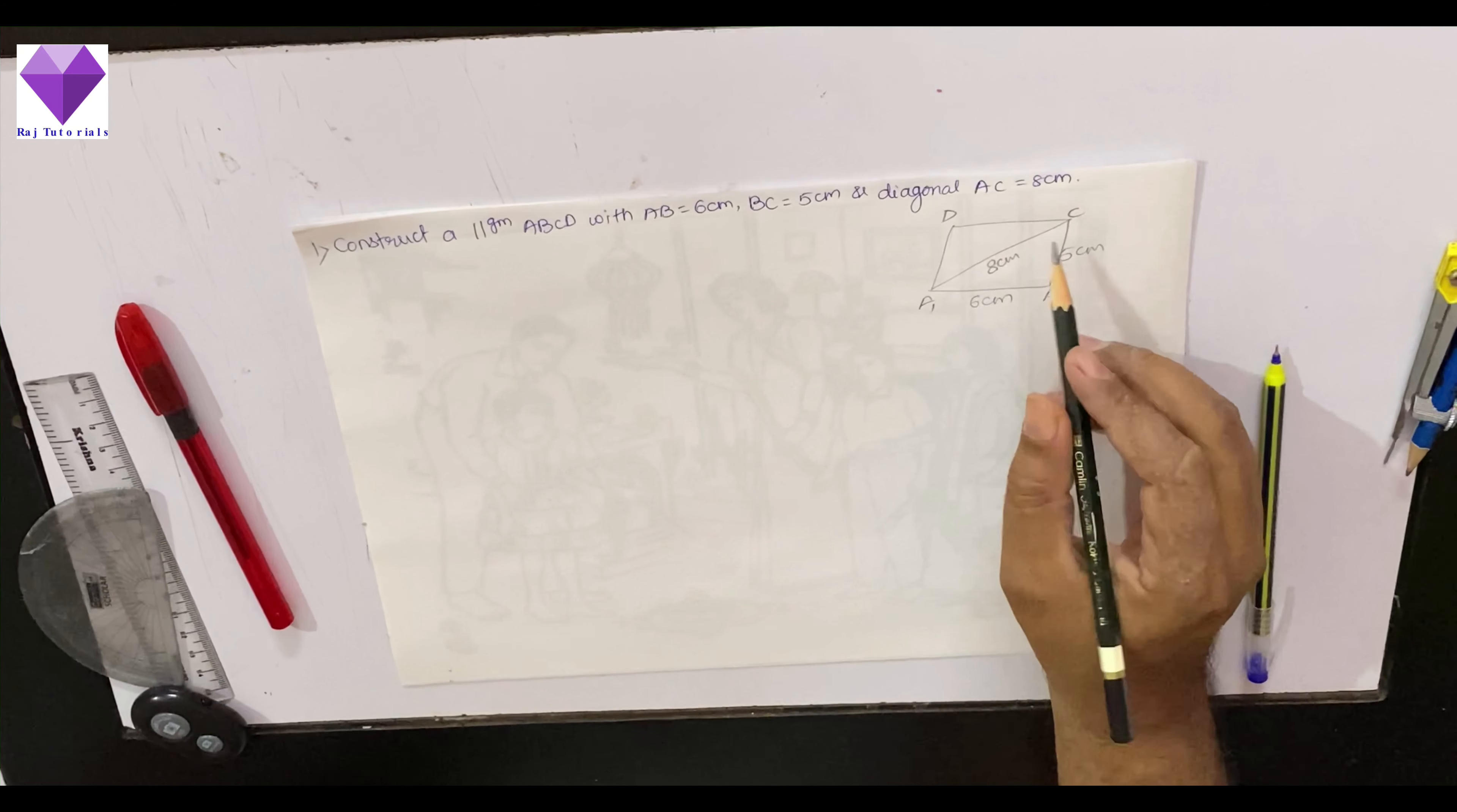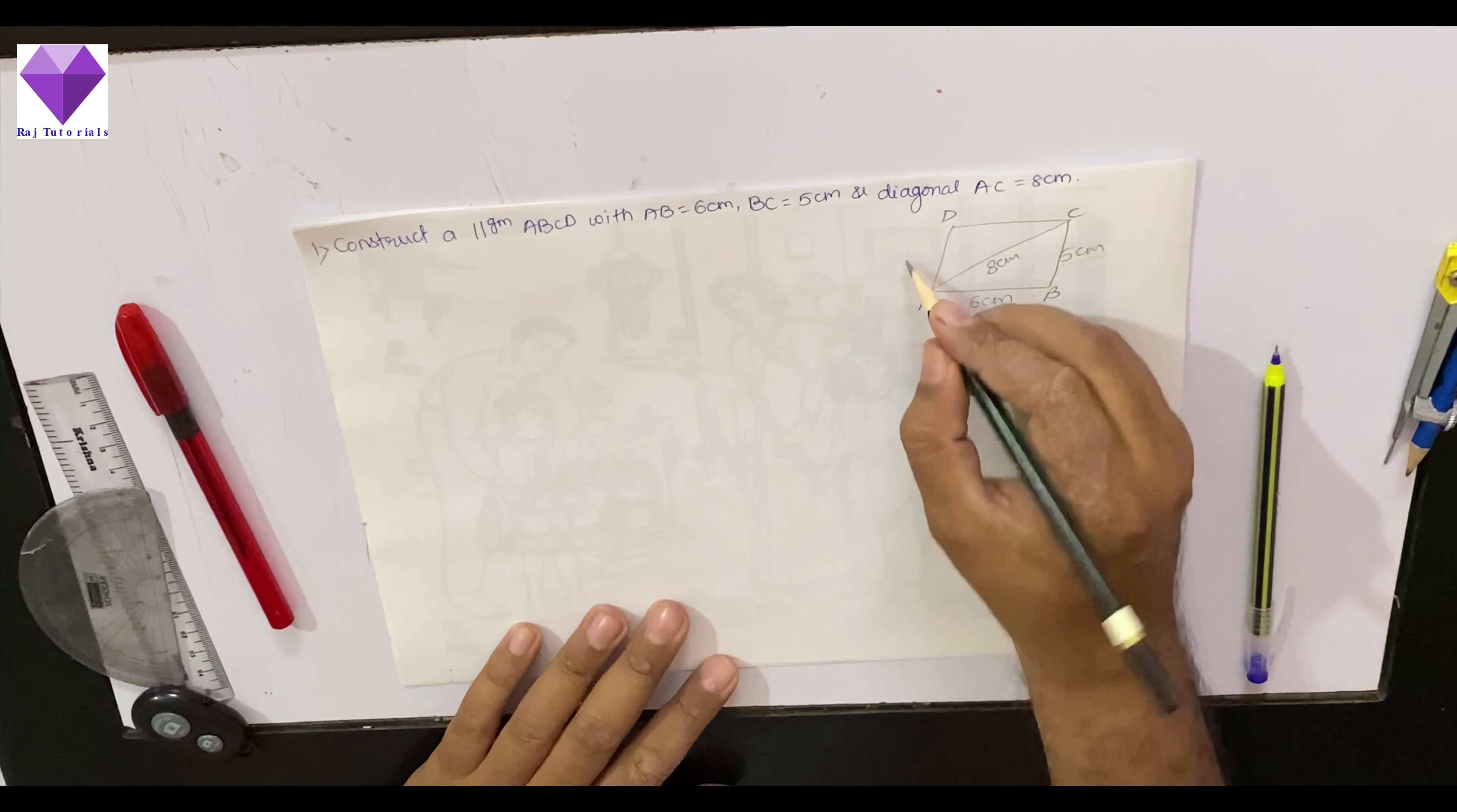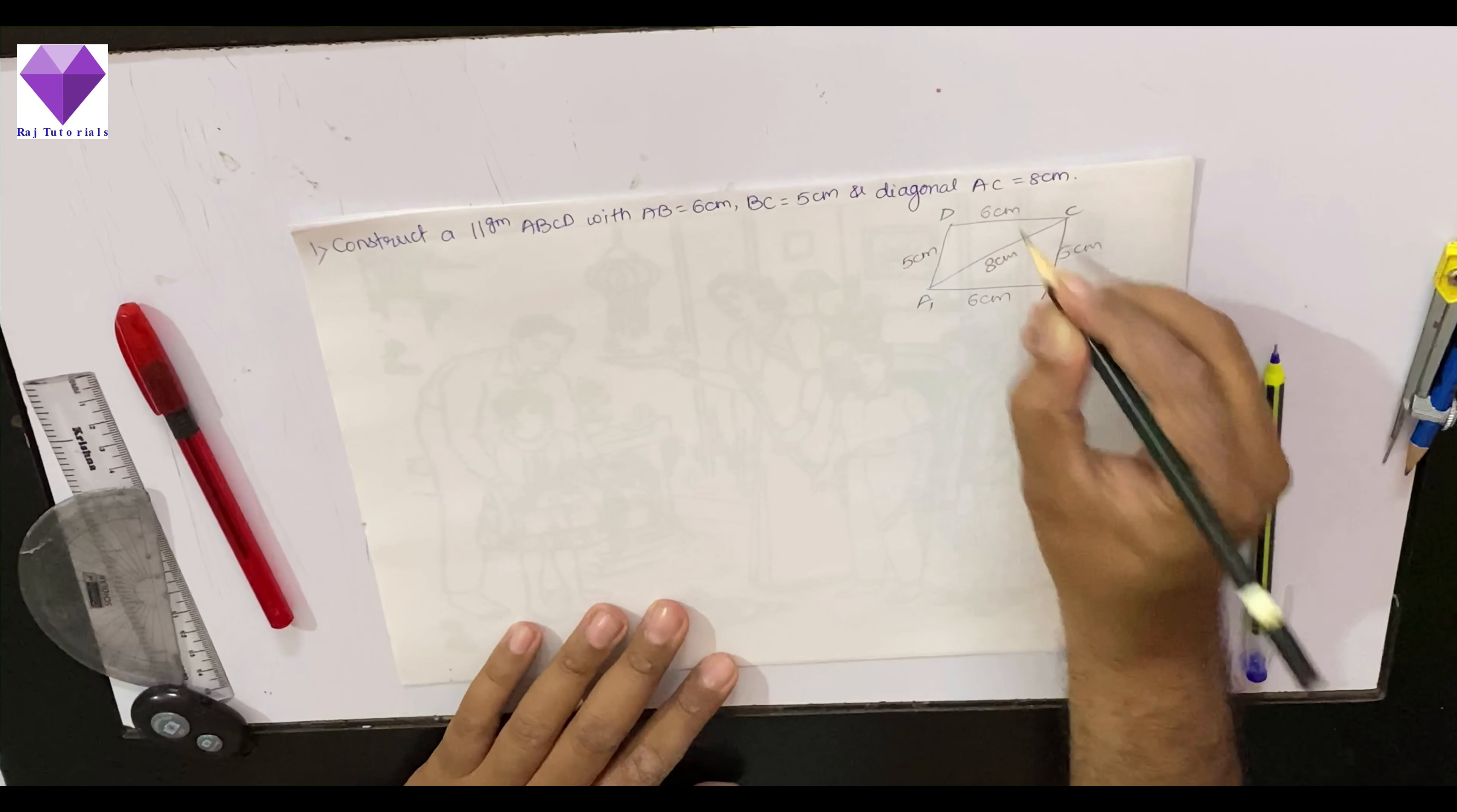To construct it, we know that opposite sides of a parallelogram are equal. So this side will be 5 cm and this side will be 6 cm.